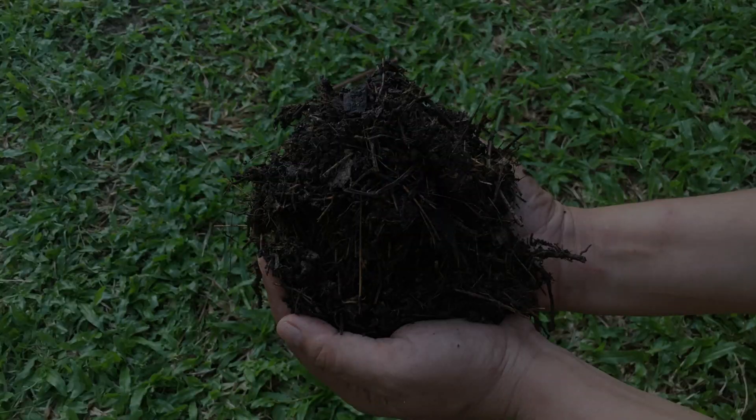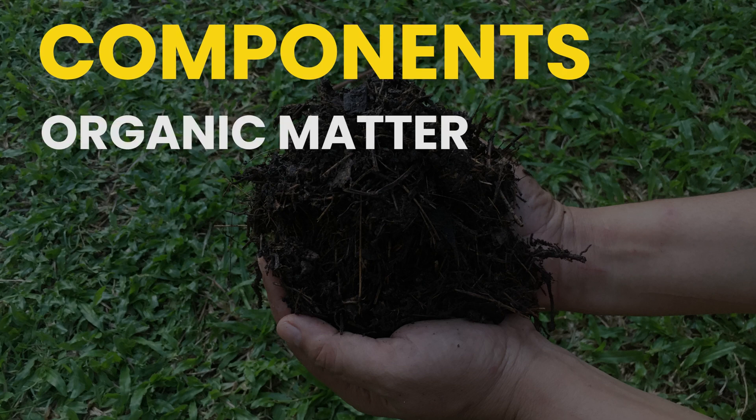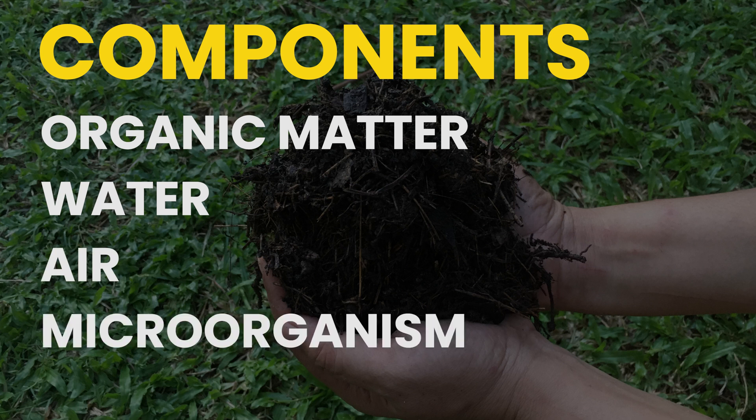Composting consists of four main components: organic matter, which is divided into carbon and nitrogen; water; air; and microorganisms.